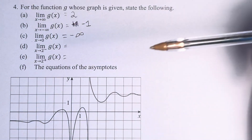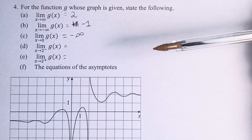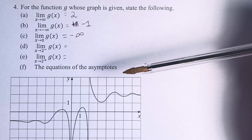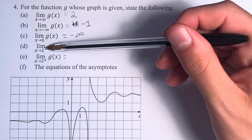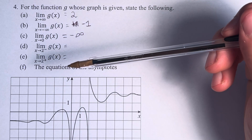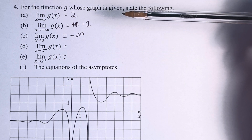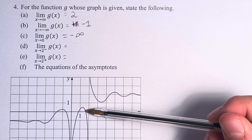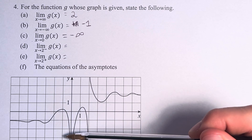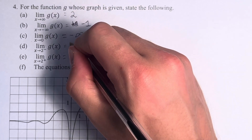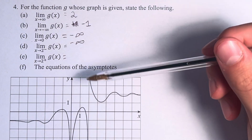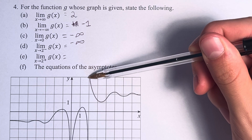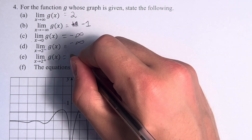We also have the limit as x approaches 2, but separated into the limit from the left and the limit from the right, because in this particular case they approach different values. The limit as x approaches 2 from the left means we are looking at values getting closer to 2 but less than 2. Starting, let's say, from 1, as we get closer and closer to 2, the values of the function get smaller and smaller and go off to negative infinity. Meanwhile, from the other side, starting at 3 and getting closer to 2, the value of the function is getting larger and larger, going off to positive infinity.